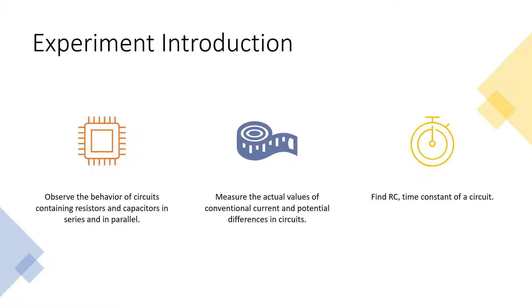In this experiment, we'll build two different circuits to observe the behavior of circuits containing resistors and capacitors in series and in parallel, measure the actual values of conventional current and potential differences in circuits, and find the RC time constant of a circuit.